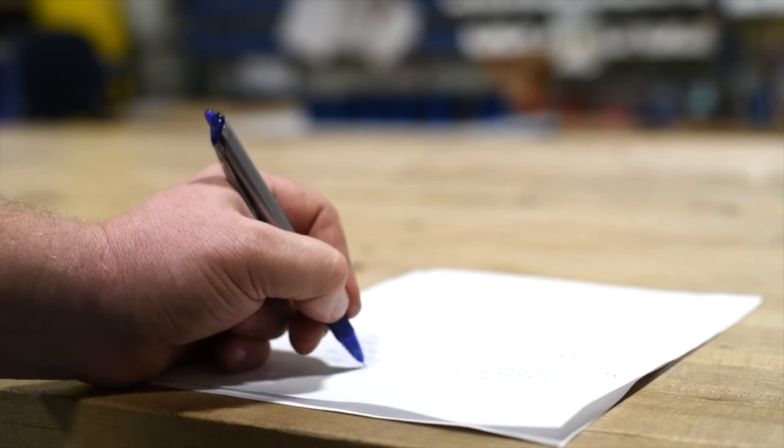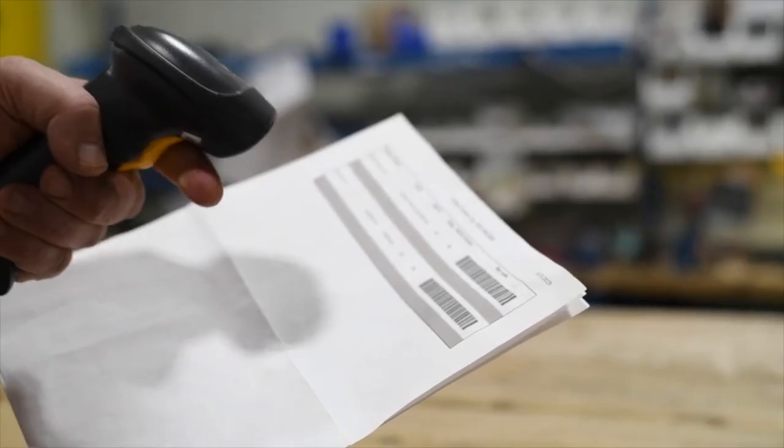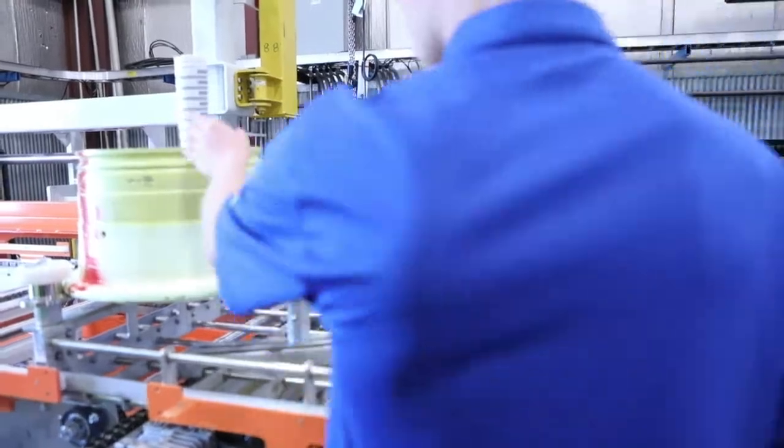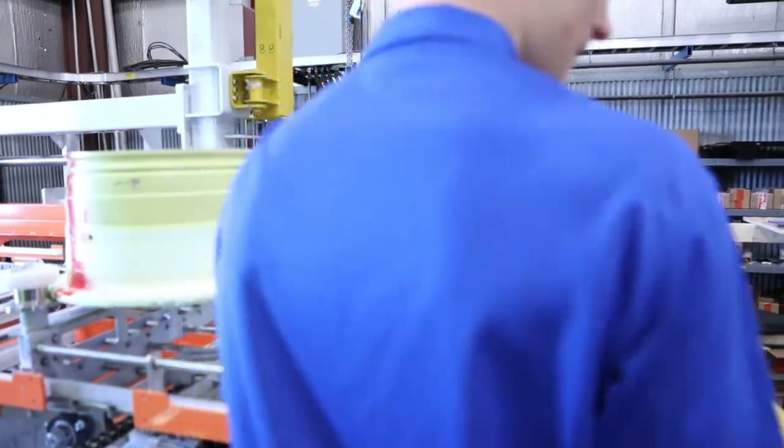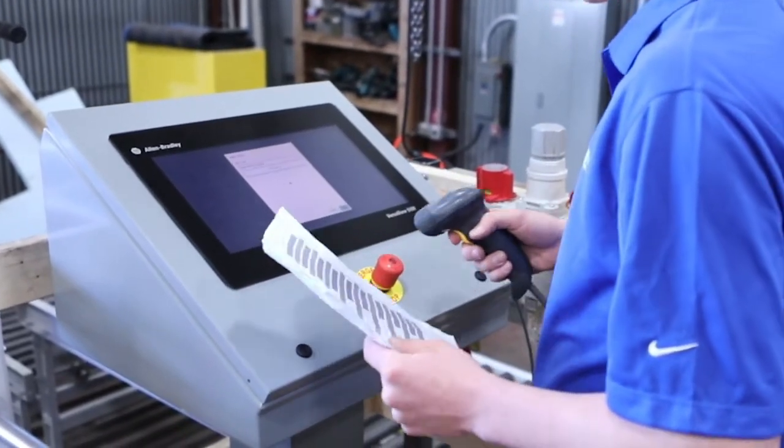The Coho solution replaces the pen with a handheld barcode scanner. Interactions between the operator and the database utilize visual and audio signals by simply clicking the trigger on the handheld barcode scanner.